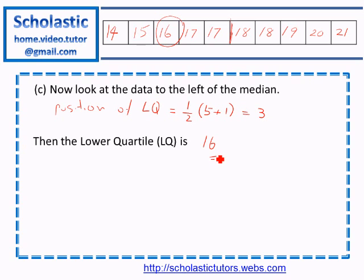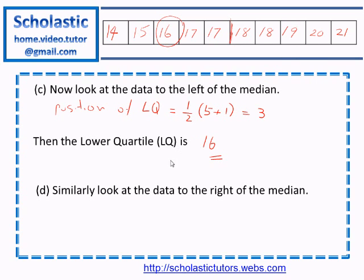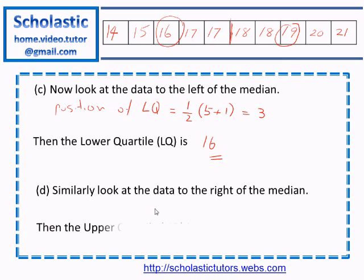Similarly, we look at the numbers to the right of the median — there are 5 numbers. Again, the position is half of (5 + 1) = 3. The third number in the right half is 19, so the upper quartile is 19.